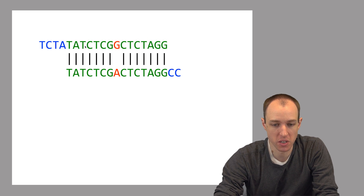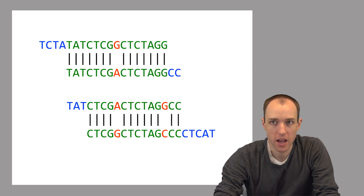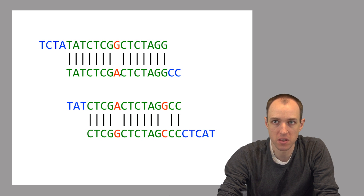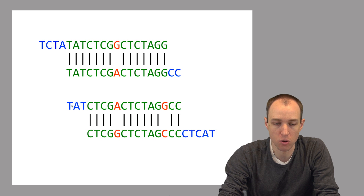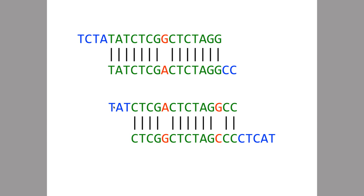Here's one overlap and here's another overlap, and these two overlaps both involve the same read — this read here is the same sequence in both overlaps. So these two overlaps have a relationship with each other. To represent all these relationships at once we're going to build something called a graph, or more specifically a directed graph.